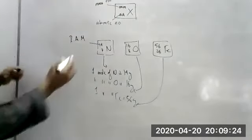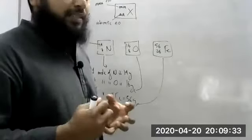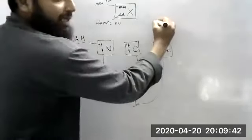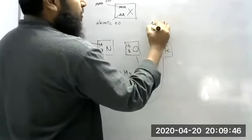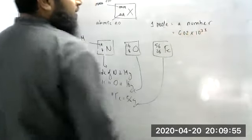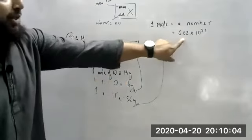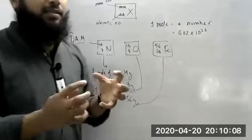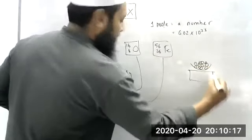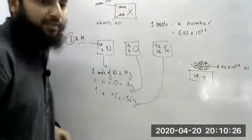Now, why is it relative? The R in RAM stands for relative. That is because to calculate the mass, when you say one mole, one mole actually means a number — mole means a number. One mole is actually a number, and that number is Avogadro's constant: 6.02 × 10²³. So when you say one mole of nitrogen is 14 grams, that means 6.02 × 10²³ atoms of nitrogen taken together have a mass of 14 grams.